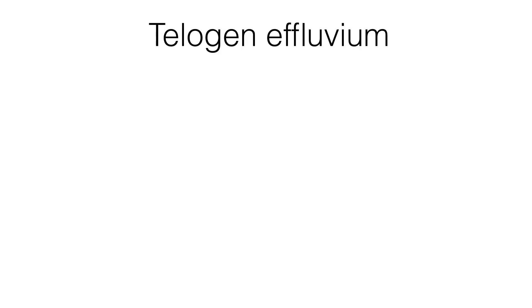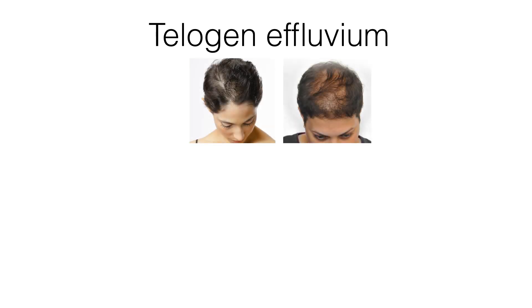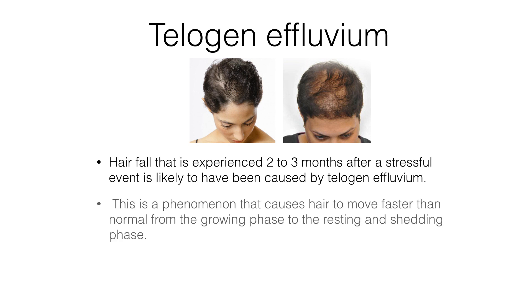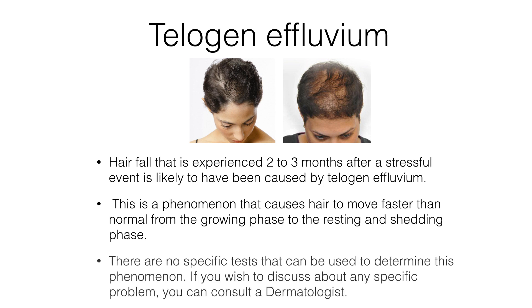Number 4: Telogen effluvium. Hair fall that is experienced two to three months after a stressful event is likely to have been caused by telogen effluvium. This is a phenomenon that causes hair to move faster than normal from the growing phase to the resting and shedding phase. There are no specific tests that can be used to determine this phenomenon.